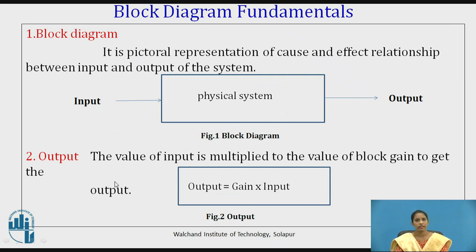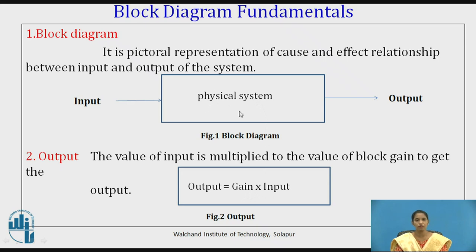Second is output. The value of the input is multiplied by the block gain to get the output. The formula is: Output = Gain × Input. Gain is the value present within the system block. That gain multiplied by the input gives the output. We will see in further slides what gain actually means.